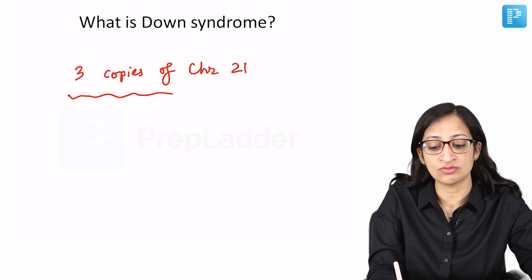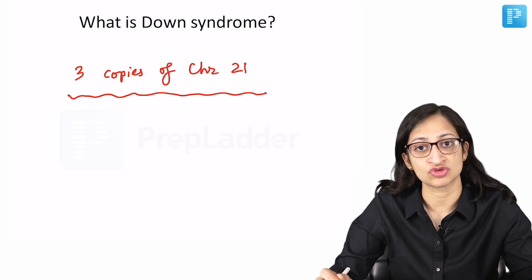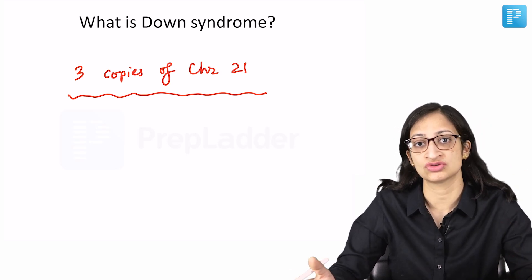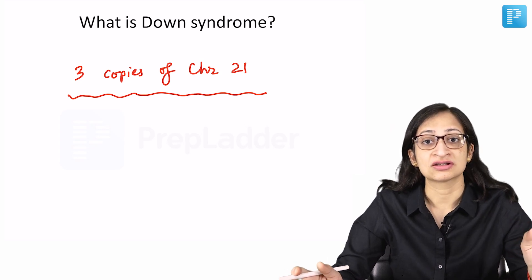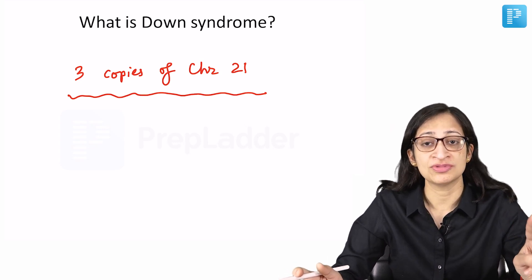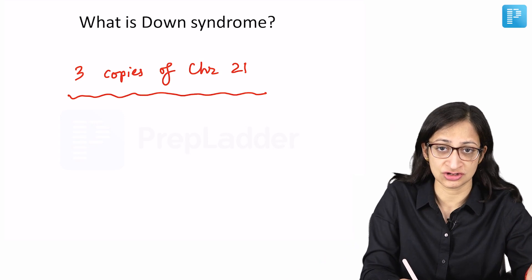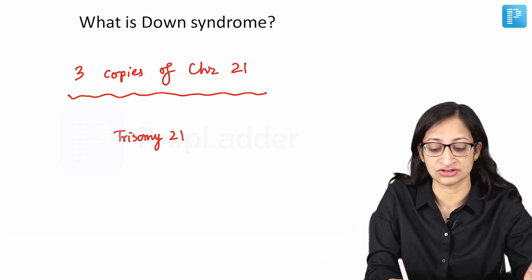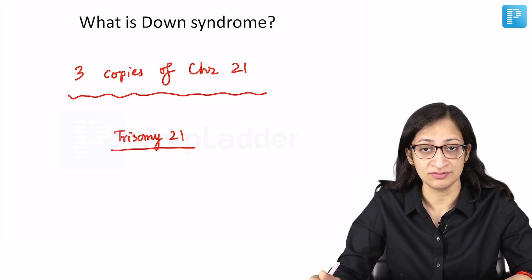Normally in our body we have 2 copies of each of the chromosomes like chromosome 1, chromosome 2, chromosome 3 and so on. But if we have 3 copies of chromosome 21, that condition is called trisomy 21, and that is an abnormal condition which is known as Down syndrome.